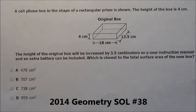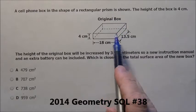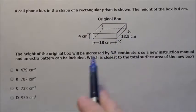Here's problem 38. It says a cell phone box in the shape of a rectangular prism is shown below. The height of the box is 4. So here are the dimensions.